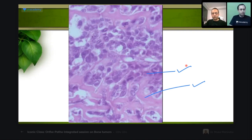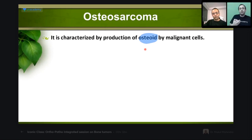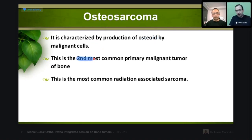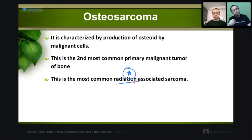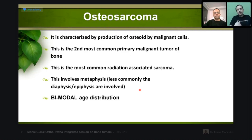The microscopic diagnostic hallmark of osteosarcoma is osteoid production by malignant cells — in the biopsy the extracellular material is the osteoid, that is the clincher microscopically. It is the second most common primary malignant tumor of bone. Very importantly — put a star on this — it is the most common radiation-associated sarcoma, and also the most radio-resistant tumor. This is pretty commonly asked. It involves the metaphysis; less commonly diaphysis and epiphysis.